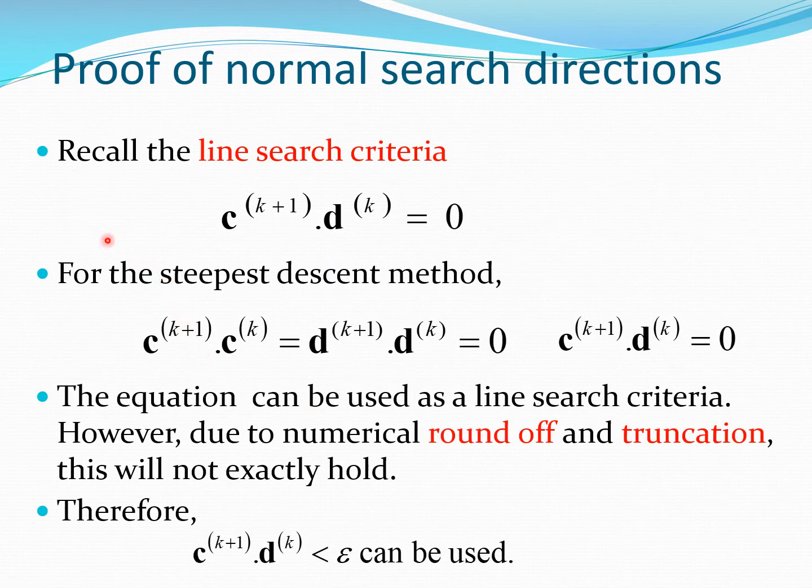Now how to prove this? Let us go back to the line search criteria. If you recall, the line search criteria was c^(k+1) dot d^k equal to 0. In this, if we put in the fact that d^k is now negative c^k, essentially c^(k+1) dot c^k or d^(k+1) dot d^k would be equal to 0. So from this we see that these two search directions are normal, and also the two gradients are also going to be normal because the search direction is essentially nothing but the negative of the gradient vector. Essentially, the line search criteria leads to this particular normality of the search directions.